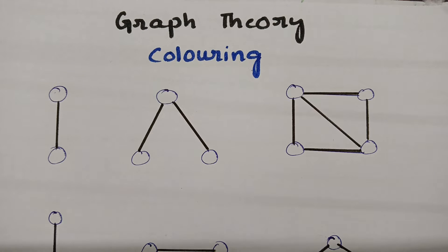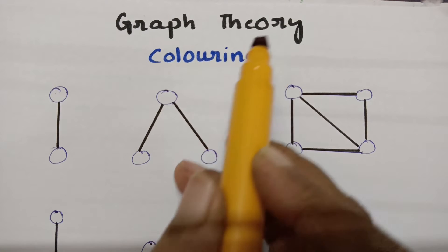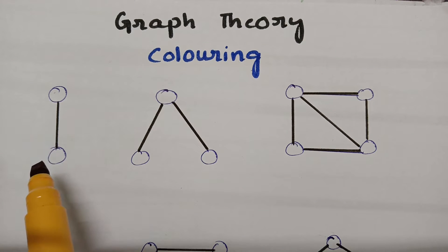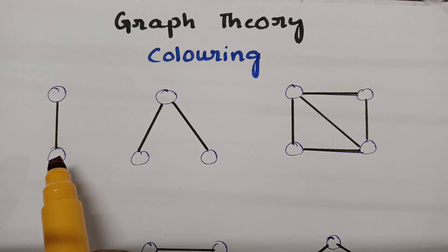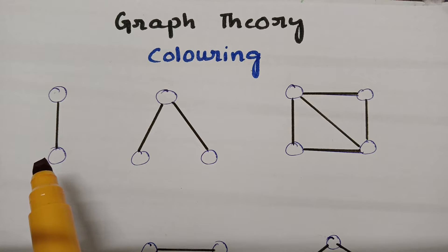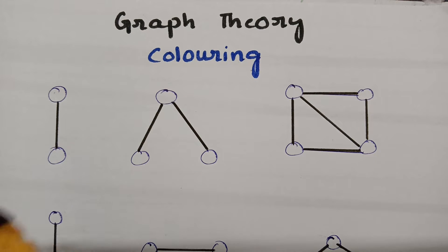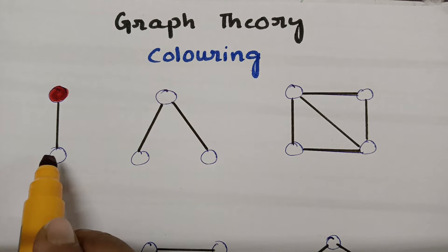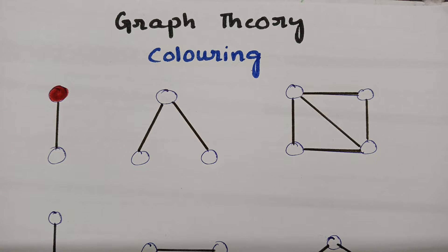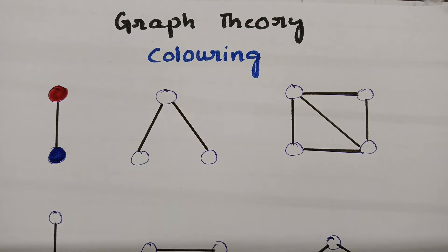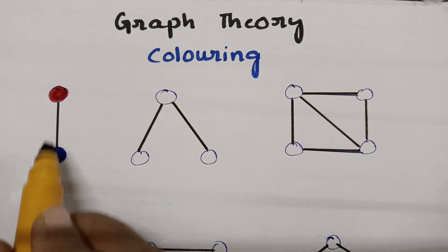This topic is coloring of the graph, from graph theory. The assignment of colors to the vertices of the graph so that no two adjacent edges and vertices get the same color is called coloring of the graph, or simply vertex coloring. No two edges and vertices get the same color — they should have different colors.